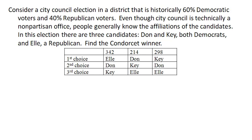Let's find the Condorcet winner in this election. We're looking at a scenario where we have a city council election where the district is historically about 60% Democratic voters and 40% Republicans, and people know the affiliations of the candidates even though it's officially nonpartisan. Don and Key are both Democrats, and L is Republican. Here is the election.